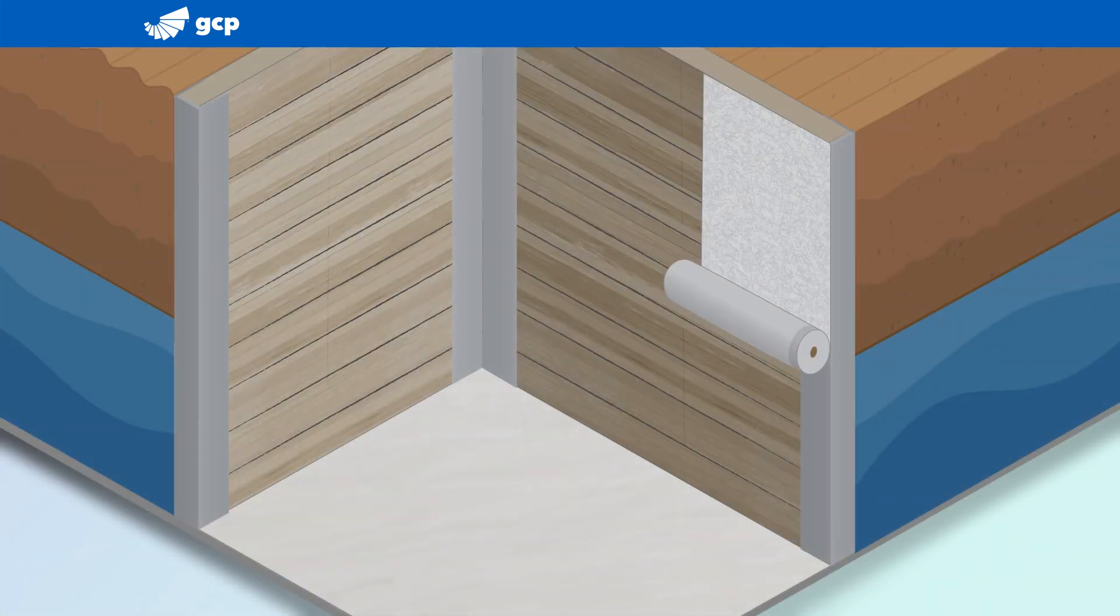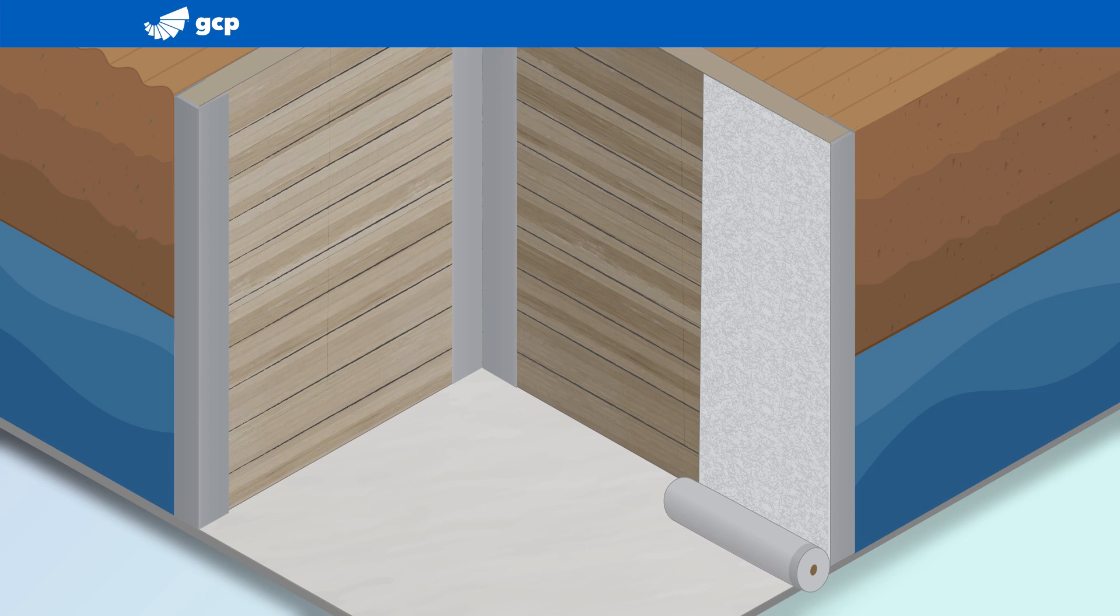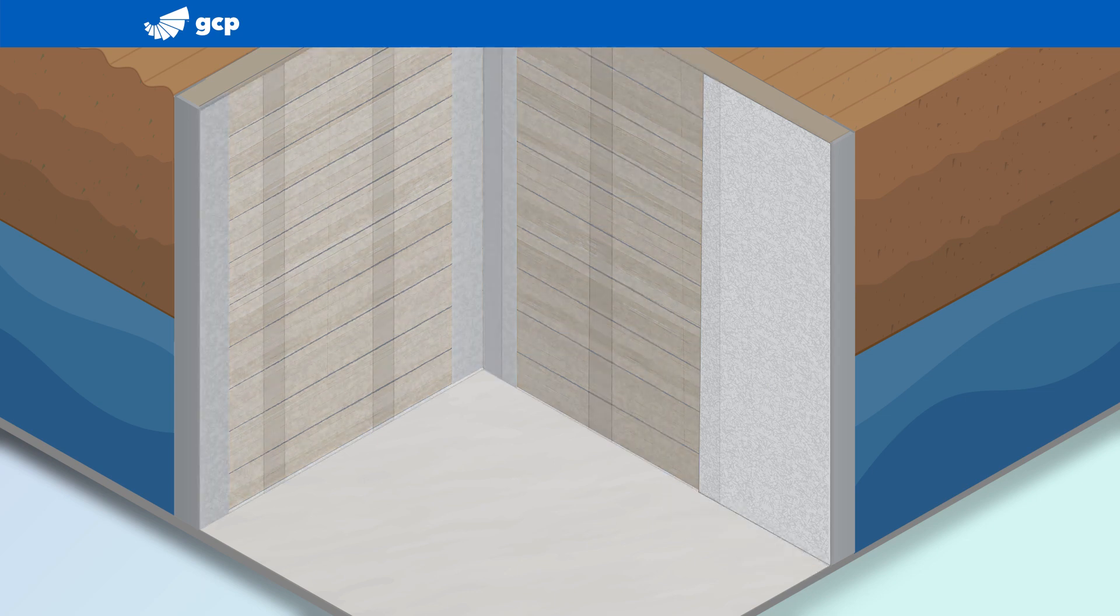PreProof SCS carrier membrane is mechanically attached to the substrate wall, sealing the overlaps between sheets.